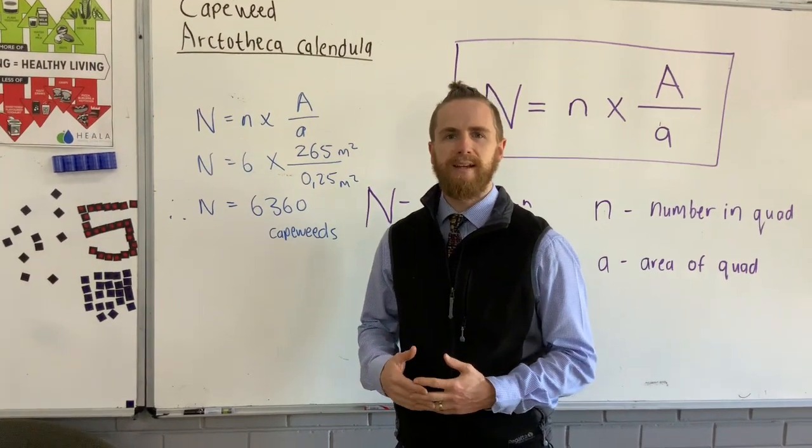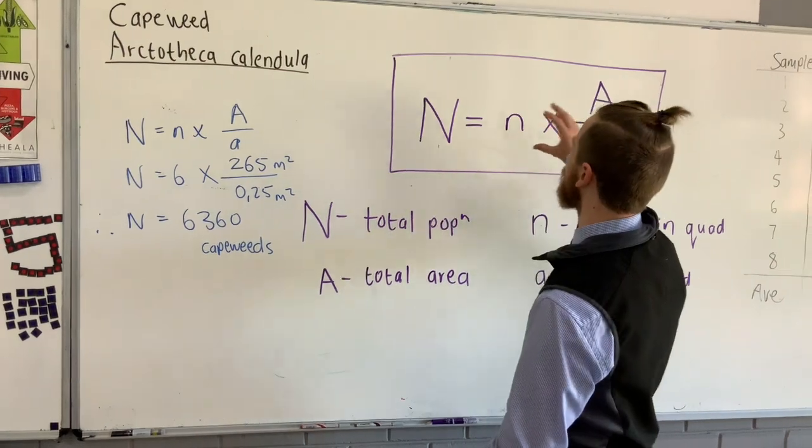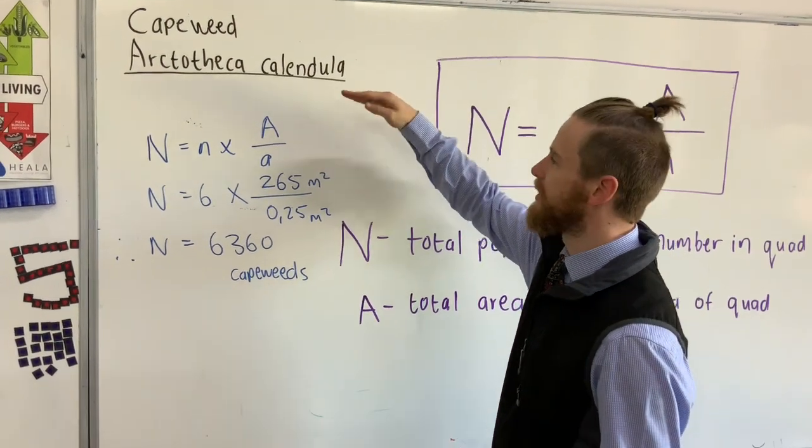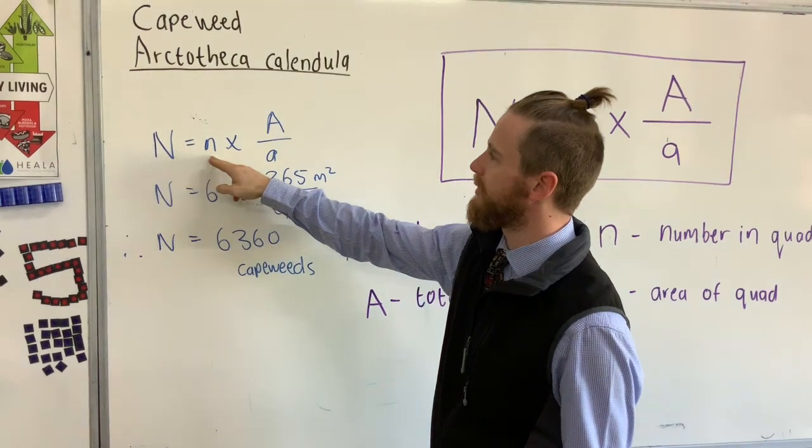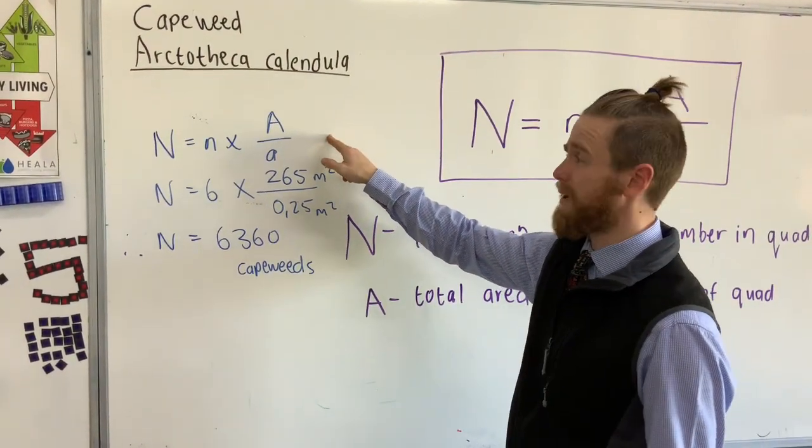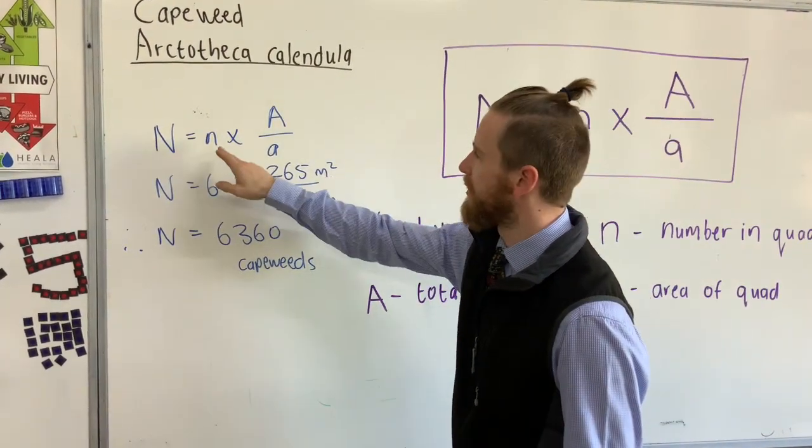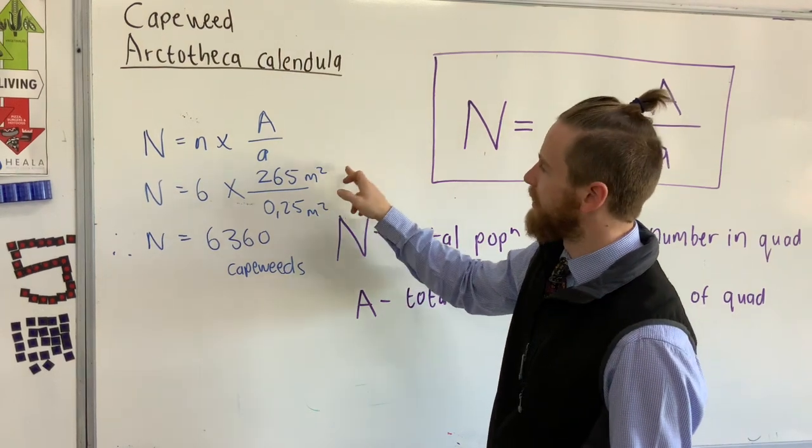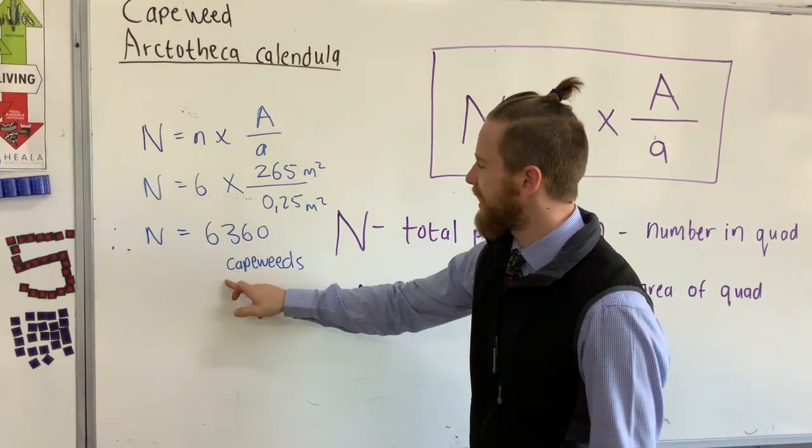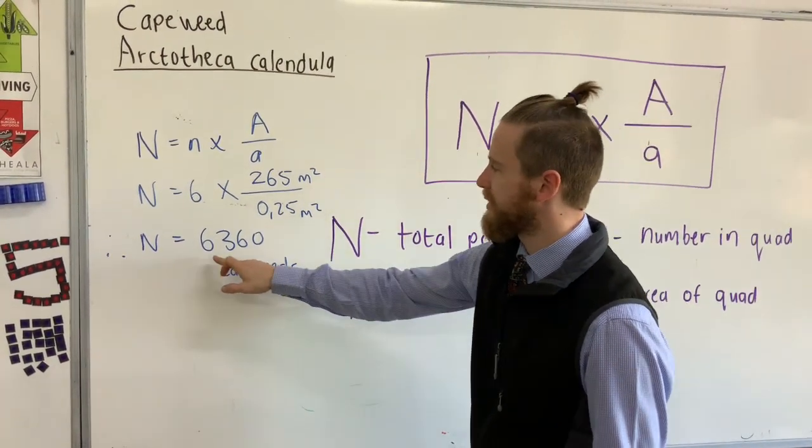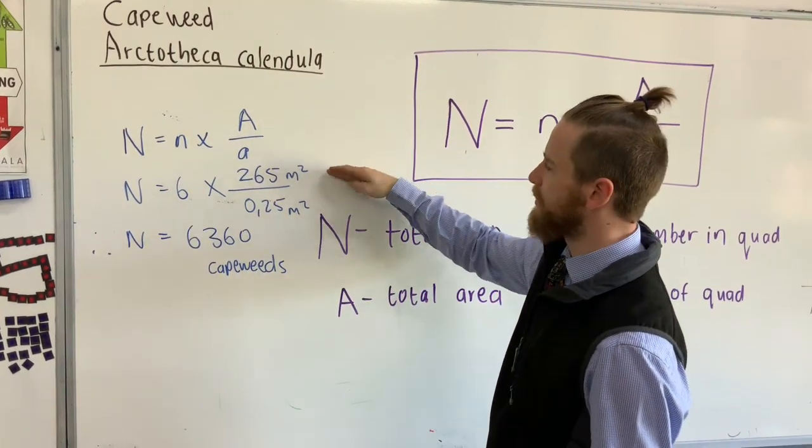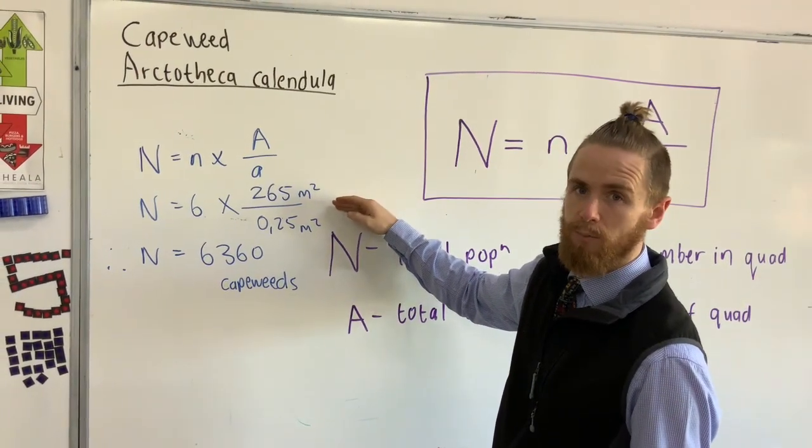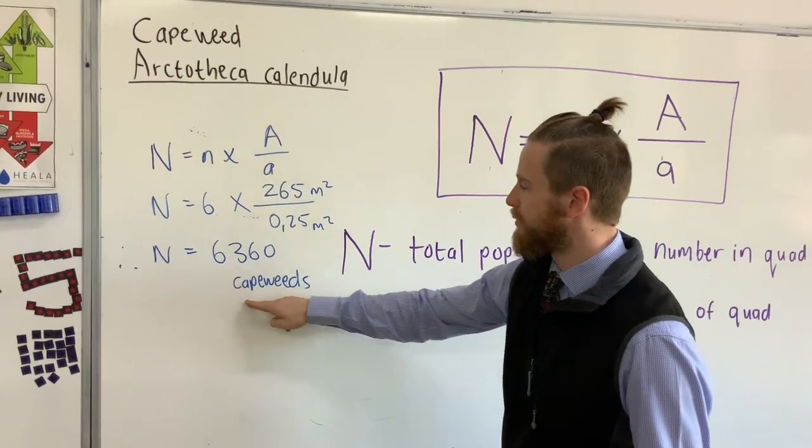When answering this question, a mistake that lots of people make is to not show their working properly. So, when we do these calculations, this is our formula. Now, with a calculation, you always, always, always, always write down the formula first. So, step one, big N equals little n times big A over little a. That's going to give you a mark straight away. Next step, then, is we need to substitute in our numbers. So, remember, little n was 6, big A was 265, and little a was 0.25 meters squared. Then, plug it into your calculator, write down your answer, and again, there's no units, but it's 6,360 cape weeds. Each of these steps is going to get you a mark. It's important to write them out, in case you make a mistake entering it, you've still got those marks there. So, always show your working, write it out like this, step by step, including what it is that you're talking about at the end.